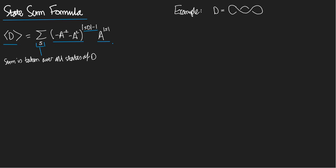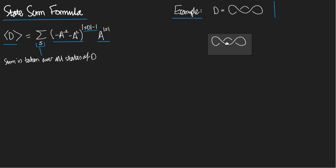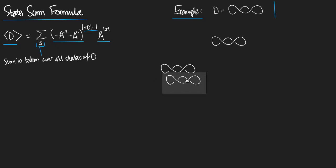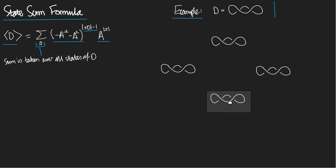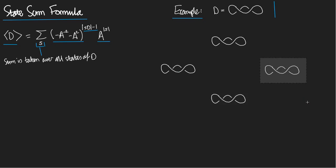My example is going to be this entirely ridiculous diagram of the unknot. To apply the state sum formula, I'm going to take four copies of this diagram — four because the diagram has two crossings, so there are two squared equals four states. Let me draw all four states.